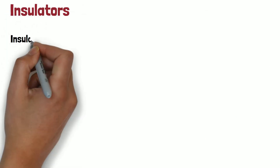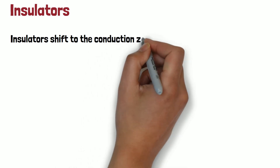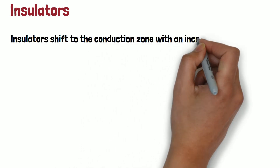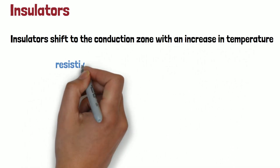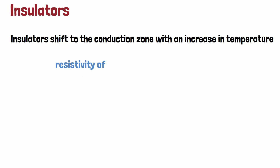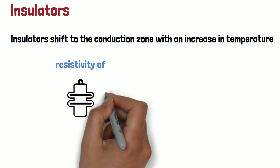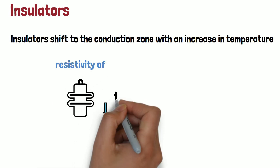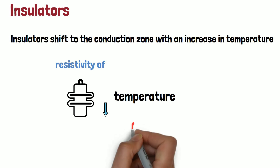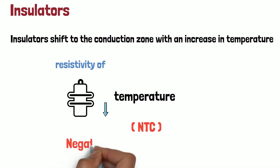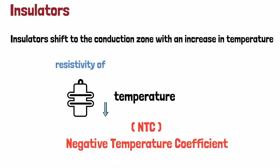Insulators shift to the conduction zone with an increase in temperature. The resistivity of an insulator decreases with temperature, resulting in an increase in conductivity. Insulators exhibit a negative temperature coefficient of resistance.